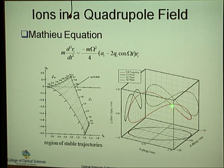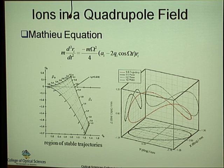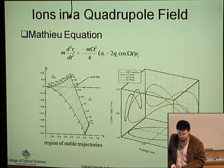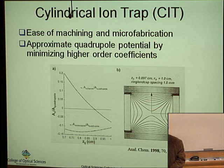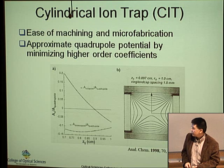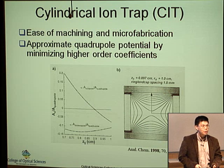The stable solution shows the charged particle moving in a bounded trajectory, while the unstable solution causes the particle to escape. Inside this quadrupole potential, you can trap a charged particle, and depending on the charge and mass, the particle has either a stable or unstable trajectory. Our goal is to miniaturize this ion trap using standard microfabrication techniques. However, it is not easy to fabricate hyperbolic-shaped electrodes, so we need an alternative approach.